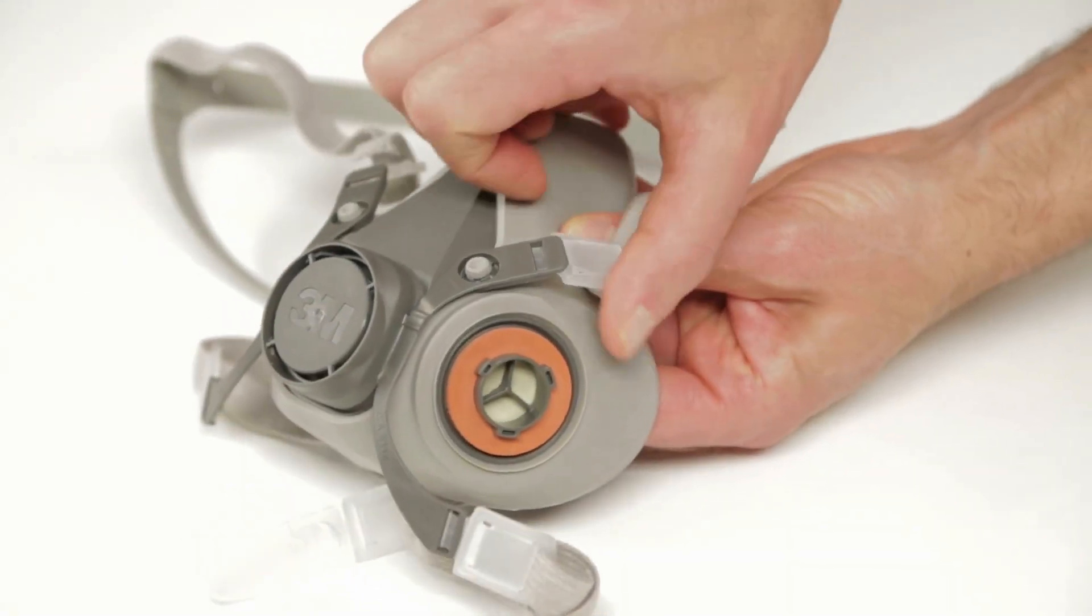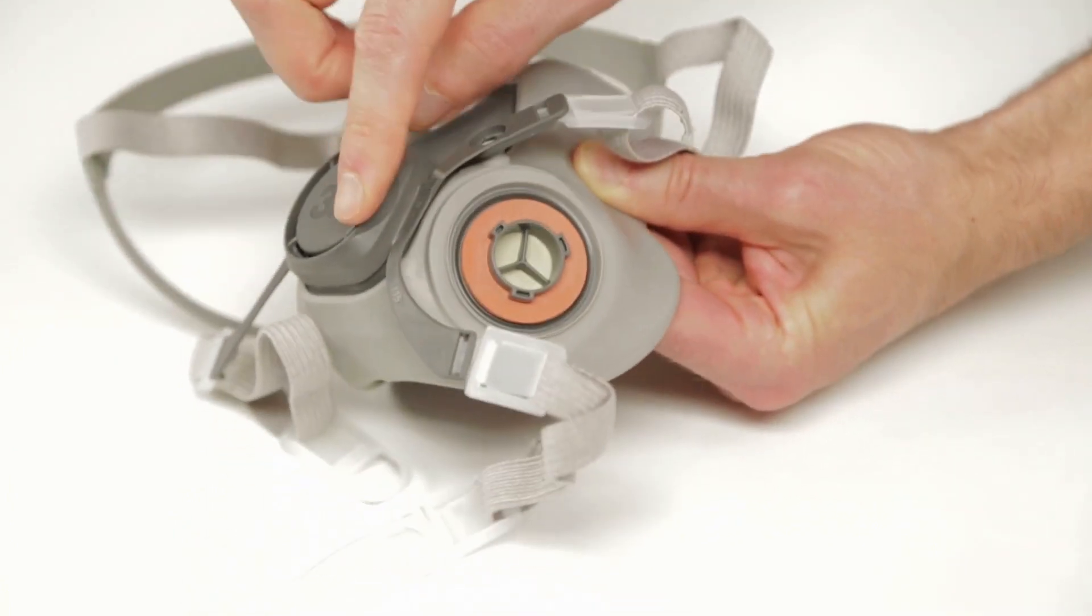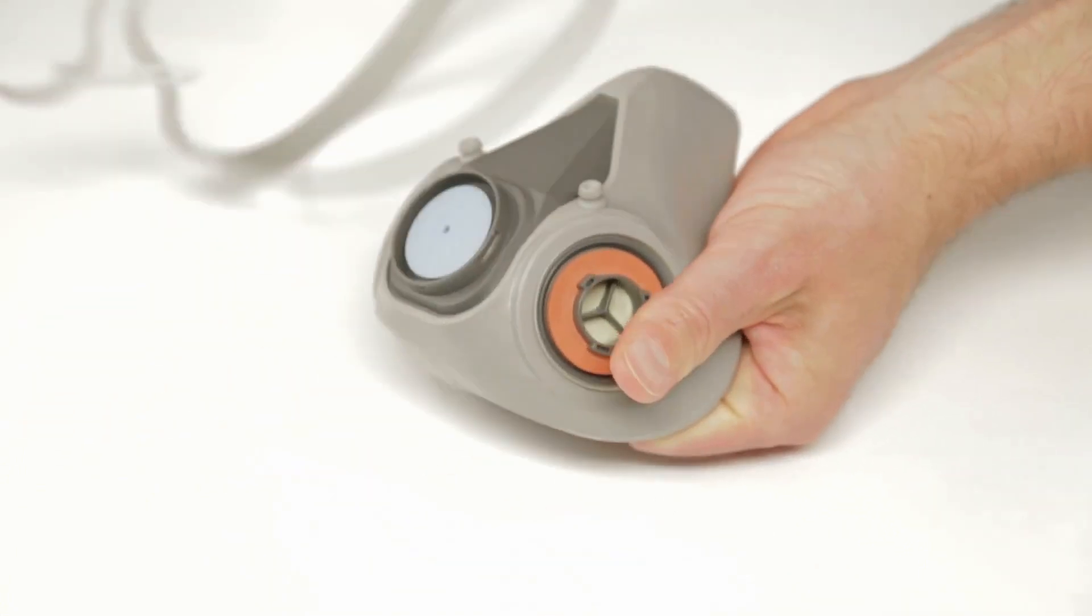To remove the respirator strap assembly, pull the upper legs from the facepiece buttons. Pry the valve cover assembly from the facepiece exhalation port.